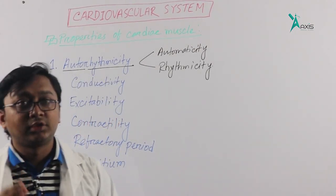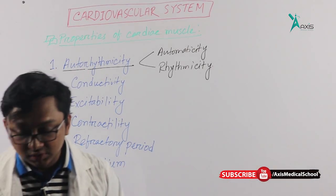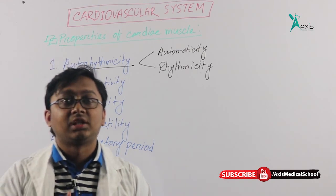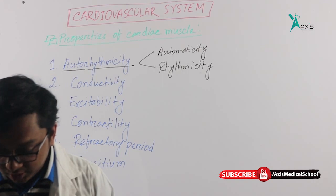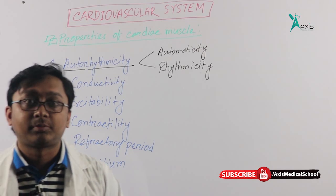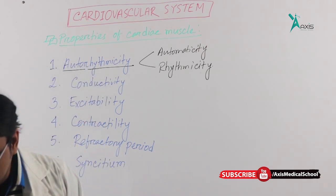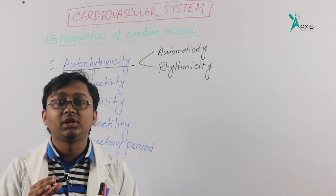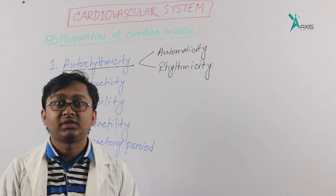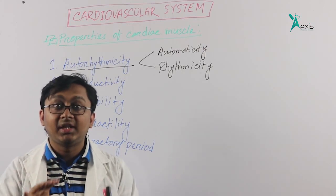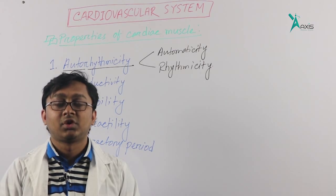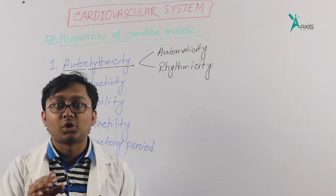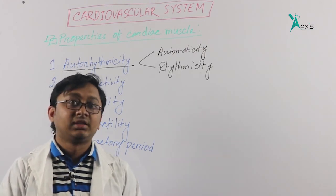Now, the SA node produces 70 to 80 impulses per minute. The AV node produces 40 to 60, and the bundle of His produces 30 to 36 beats per minute. Purkinje fibers produce 15 to 40. The SA node has the highest impulse generation rate. That's why it is called the Pacemaker, because it controls the pace of all other parts. All other conductive tissue are regulated by the impulse of the SA node. This is auto-rhythmicity.